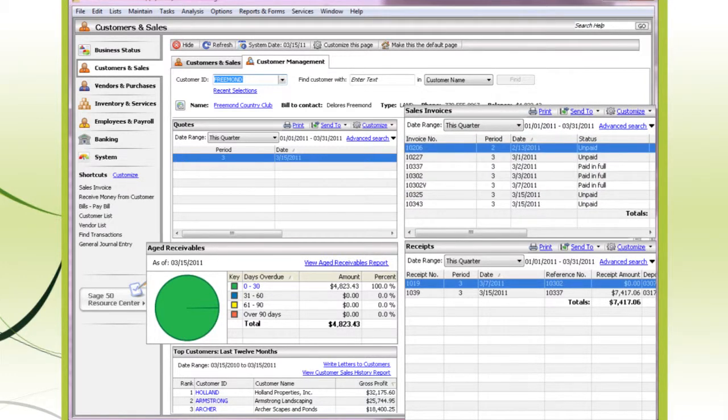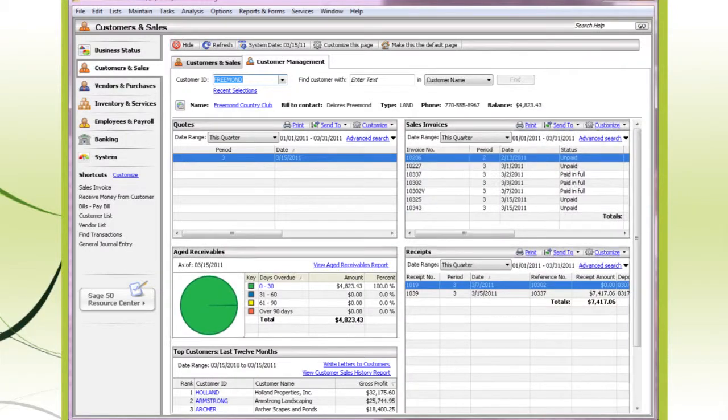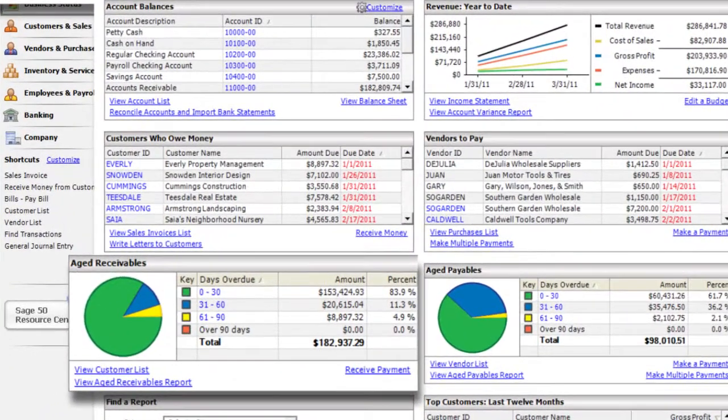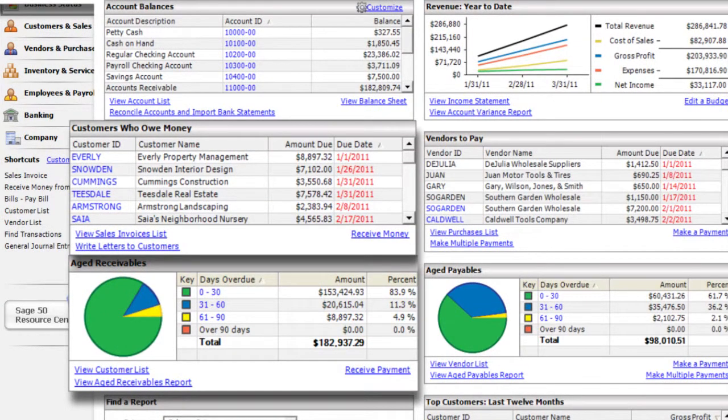What if I wanted to zoom out a bit, maybe see some payment patterns? The Business Status Center and Age Receivables reports show you which customers owe you money and how long it takes customers to pay.